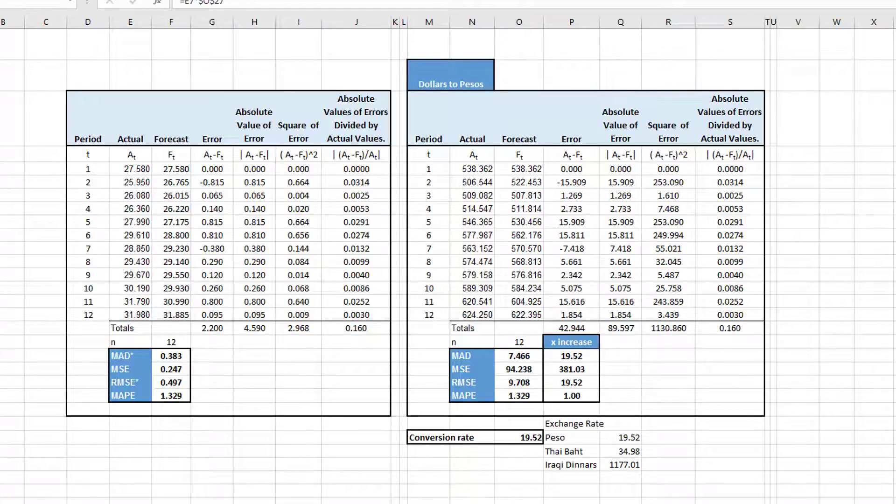In this second version of the forecast, I assumed that the actual forecast was in US dollars and I converted those US dollars into pesos using a conversion rate of 19.52 pesos to the dollar. And if you look at the underlying formulas, you can see that I just took the actual from the original, multiplied it by that conversion rate to give a new value. I did the same thing for the forecast.